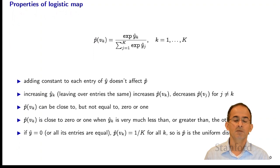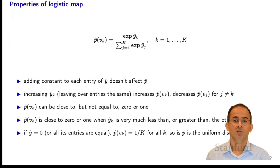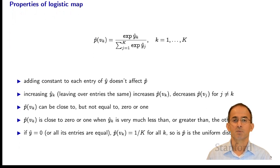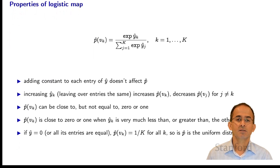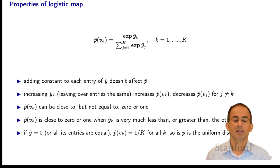Let's look at it more closely. The exponential maps the real line to the non-negative half of the real line. What the exponentials are doing is replacing all of the components of y-hat with non-negative numbers. Then the division is just normalizing it — arranging for the components of p-hat to sum up to 1. So we get a probability distribution.